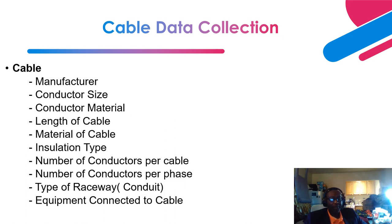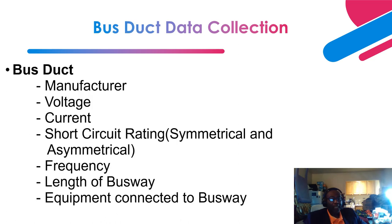Now let's talk about cable data. What you need to collect for cables includes: manufacturer, conductor size, conductor material, cable length, cable material, installation type, number of conductors per phase, number of conductors per cable, type of raceway (bus, cable, or conduit), and the equipment connected to the cable. For bus duct data collection, you need the manufacturer, voltage, current, short circuit rating (symmetrical and asymmetrical), frequency, length of the busway, and equipment connected to the busway. Bus duct impedance is very low — close to zero — so impedance data is generally not needed.